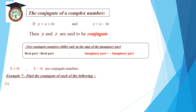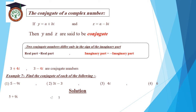Example 7: find the conjugate of each of the following. (1) 5 minus 9i — conjugate is 5 plus 9i. (2) negative 3 minus 3i — we change the sign of the imaginary number, so the conjugate is negative 3 plus 3i. (3) 4i — conjugate is negative 4i. (4) 6 — conjugate is 6, because 6 is the real part only.